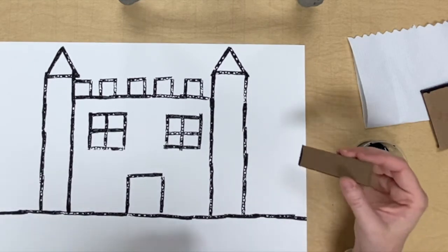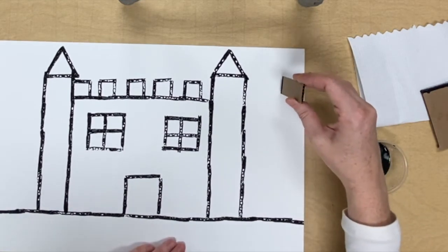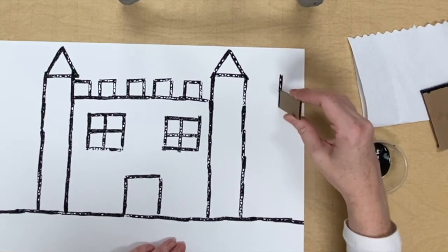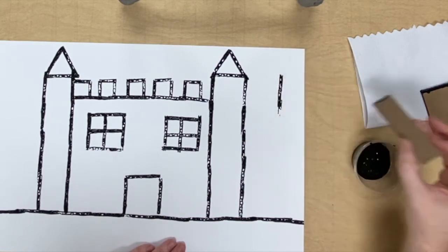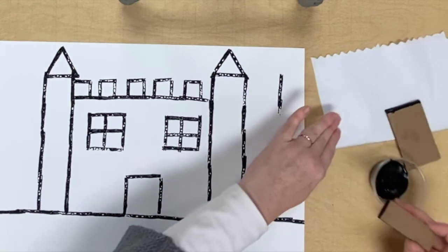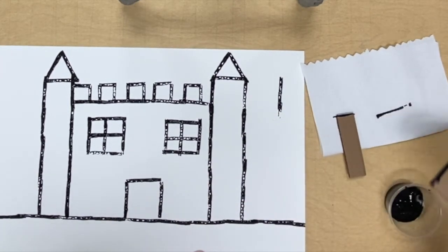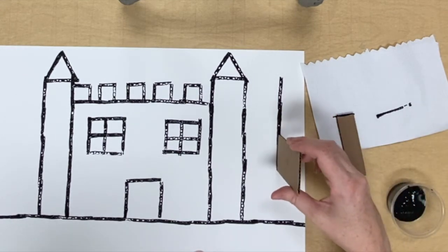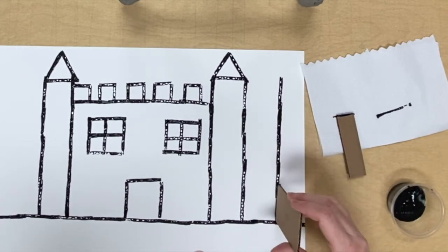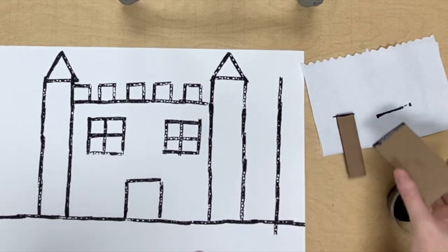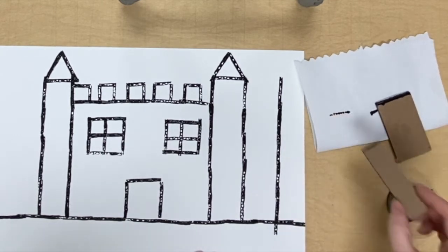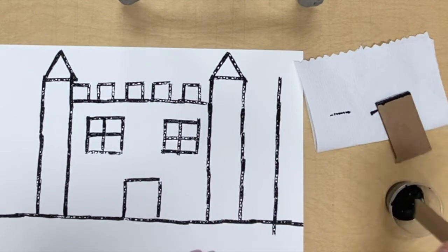My castle looks done. What else can I add to my picture? I'm going to switch to the larger tool because I need some long lines. When I'm not using one of my tools I set it on the paper towel so it doesn't get on the table.